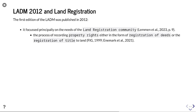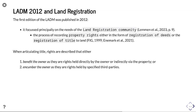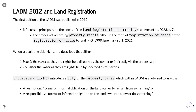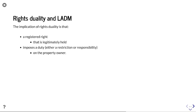The first edition of LADM was published in 2012 and focused principally on the needs of the land registration community — the process of recording property rights through the registration of deeds or title to land. When articulating title, rights are described that either benefit the owner or encumber the owner, with encumbering rights held by third parties. Encumbering rights introduce a duty on the property owner, referred to in LADM as either a restriction or a responsibility — informal or formal obligations on the landowner to refrain from or allow something to happen.